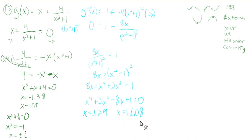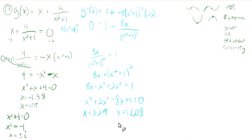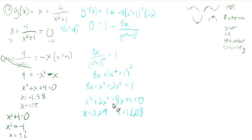These came from setting the derivative equal to zero, so these are possible extrema — places where the slope is horizontal. Keep in mind the graph we were just looking at was a graph of the derivative, not of the original function. A flat spot on the derivative's zero doesn't necessarily mean a max or min on the original — we need to investigate.